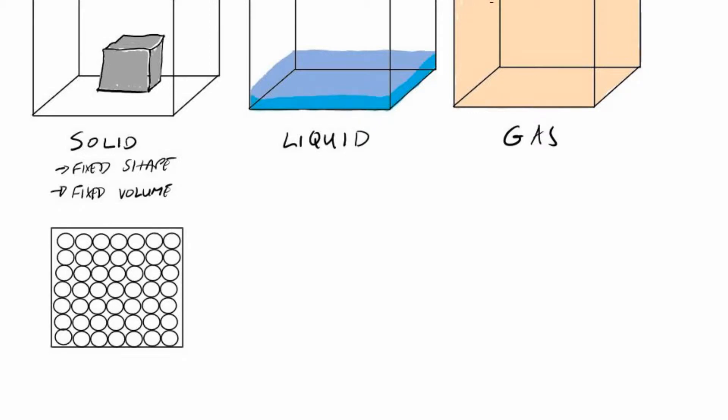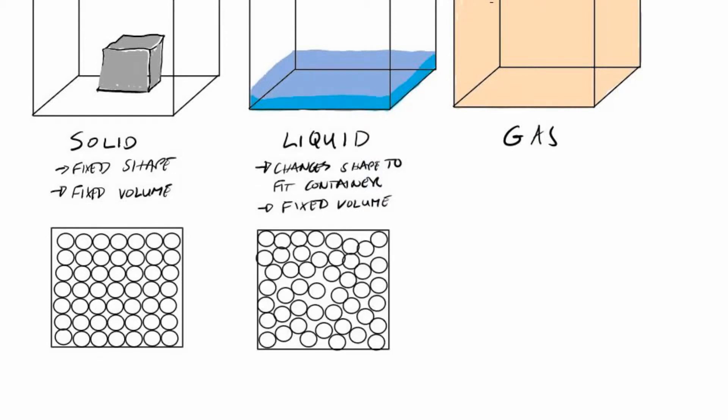A liquid does not have a fixed shape. It takes up the shape of the container but it does have a fixed volume. The molecules in a liquid are still quite tightly packed together but there's a few gaps in between them now. A gas changes shape to fit the container and it also changes its volume. It doesn't have a fixed volume, it fills up the container. We reflect that whenever we do the little diagram showing the molecules of gas by having these large spaces in between them.